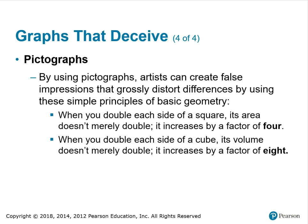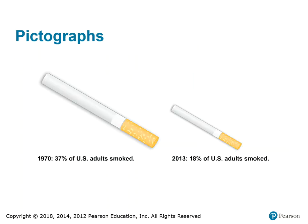When you double each side of a square, its area doesn't merely double — it increases by a factor of four. When you double each side of a cube, its volume doesn't merely double — it increases by a factor of eight. Here's an example of a pictograph representation of the decrease in smoking from 1970 to 2013.